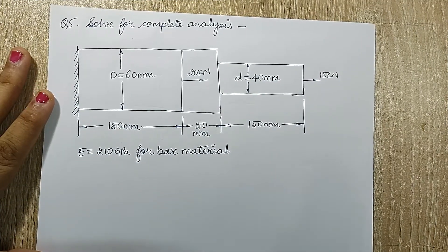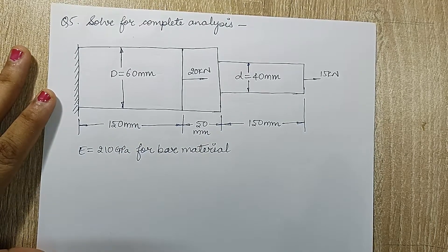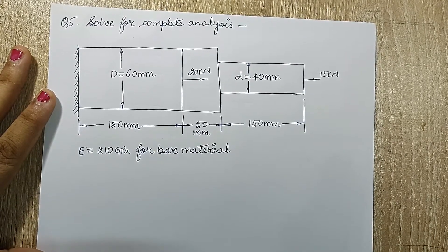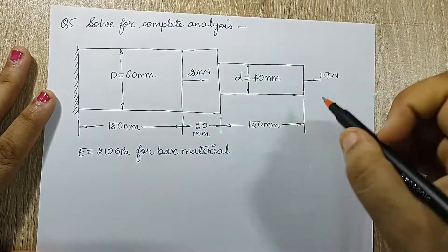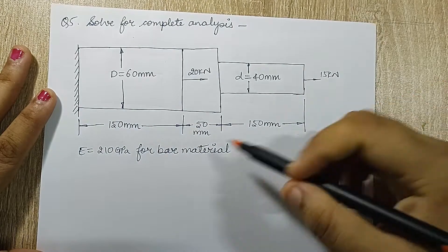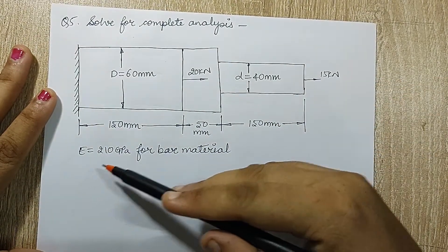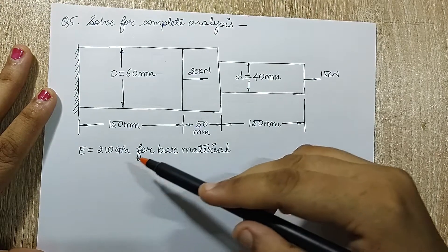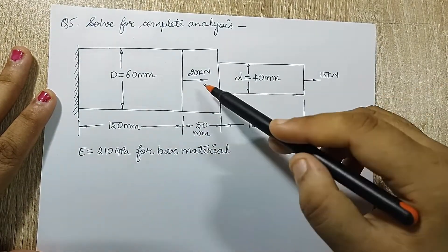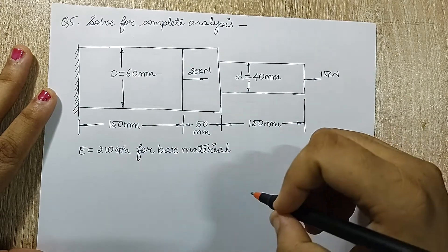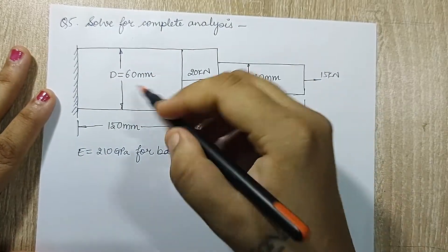Hello everyone, welcome to the next session of finite element analysis. I am solving question 5 of direct application of FEA. This is the step bar given to me; the dimensions are also given, and so is the loading. The value of E is given as 210 GPa for the bar material, which means all these bars are made of the same material.